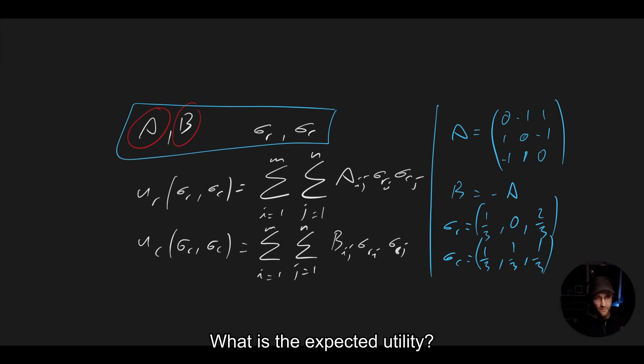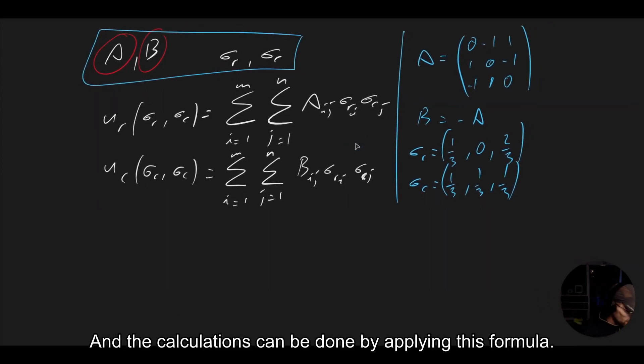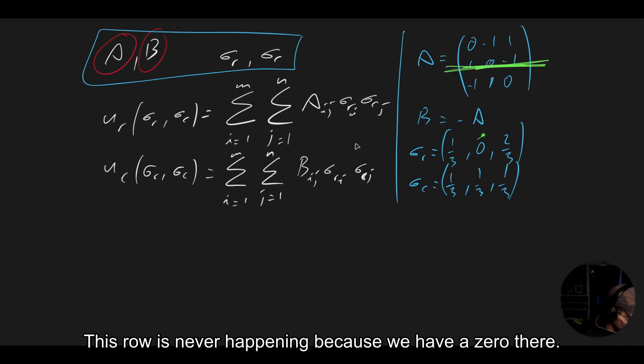And so in this particular case, what we have is everything is given with what we have on the board there, and the calculations can be done by applying these formulas. We can look at it and see we're never ever going to be in this row.